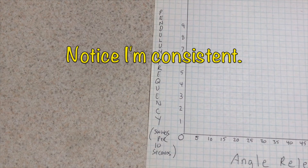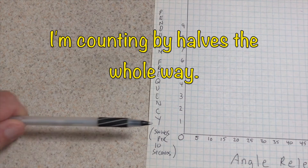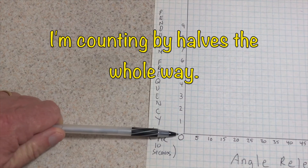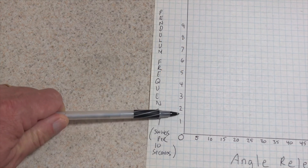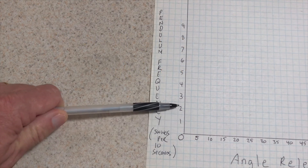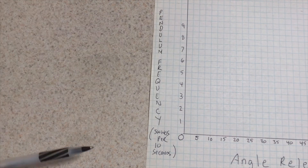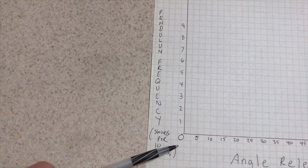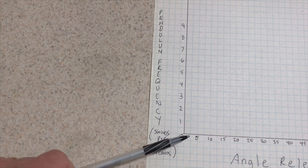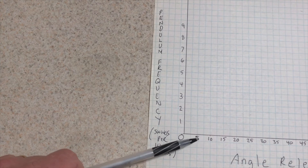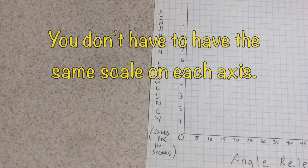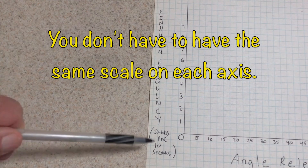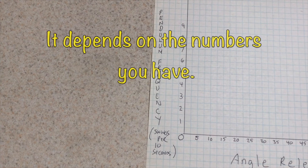Notice I'm consistent — I'm counting by halves the whole way: 0.5, 1, 1.5, 2. I have to be consistent the whole way along. On the x-axis I'm going 0, 2.5, 5, 7.5, 10. You don't have to have the same scale on each axis — it depends on the numbers you have each time.